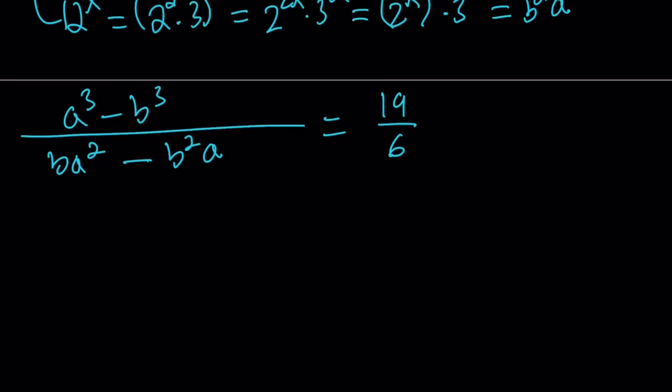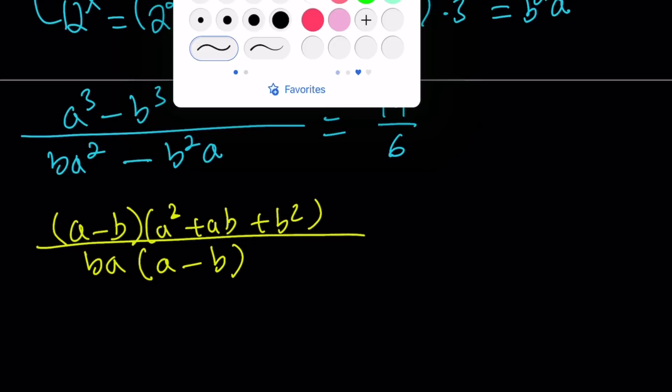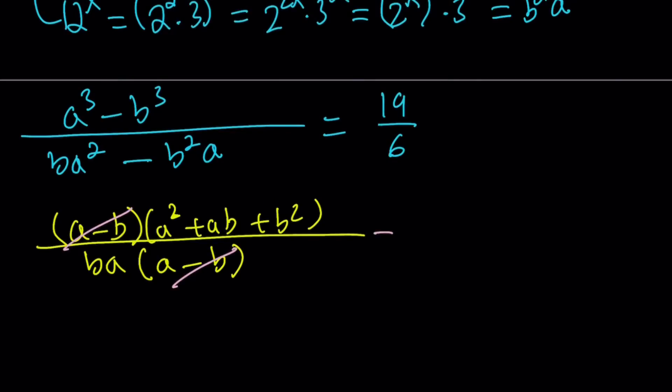First of all, by using difference of two cubes. We can write the top as follows. Then the bottom one has a common factor of b a. Inside the parentheses, that gives us a minus b, which is really cool because a minus b cancels out. We just got to be careful here because when you're canceling something, you're basically dividing by that or you have to make sure it's not 0. So in this case, a minus b does not equal 0, which means a does not equal b.